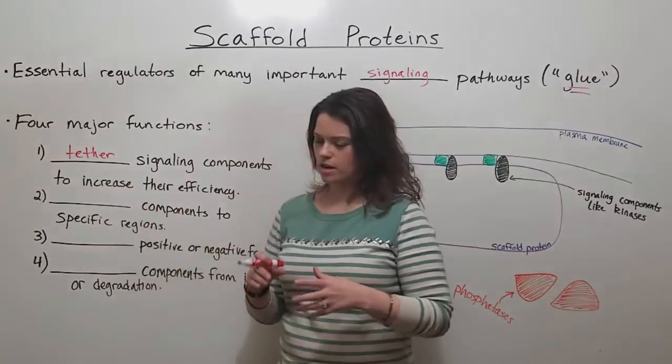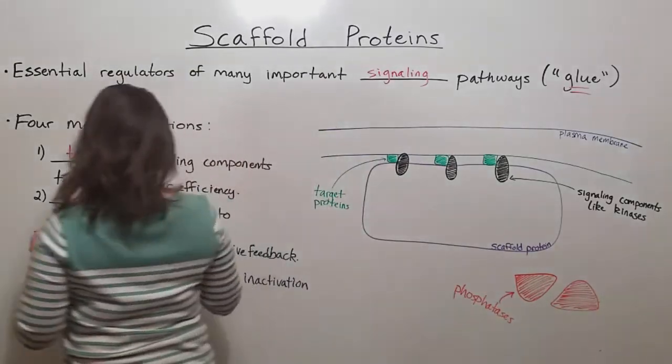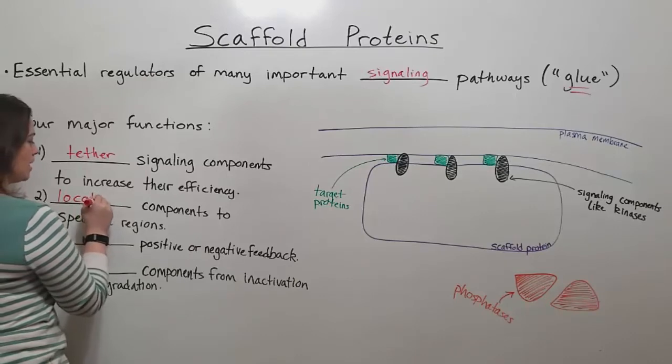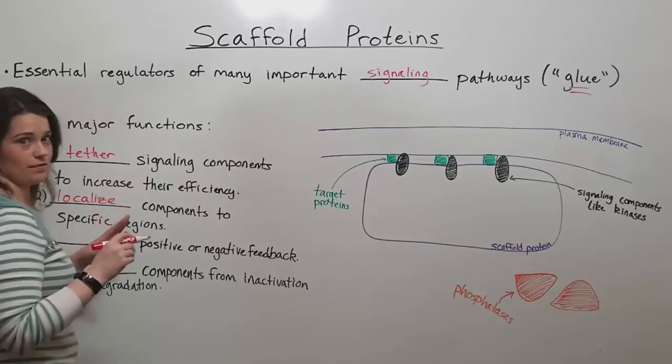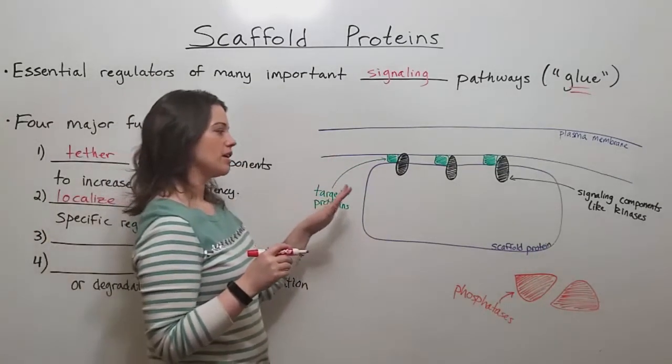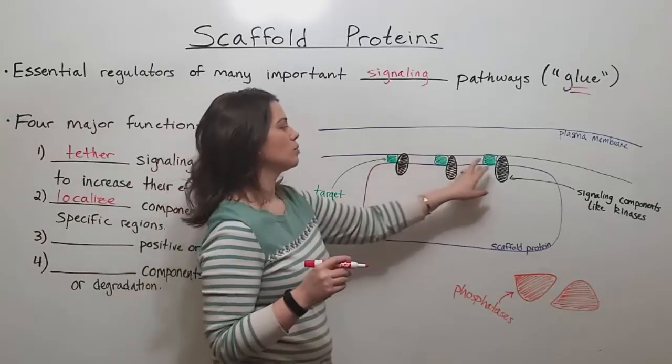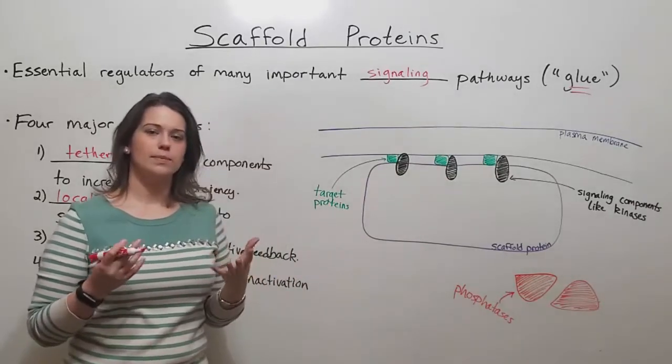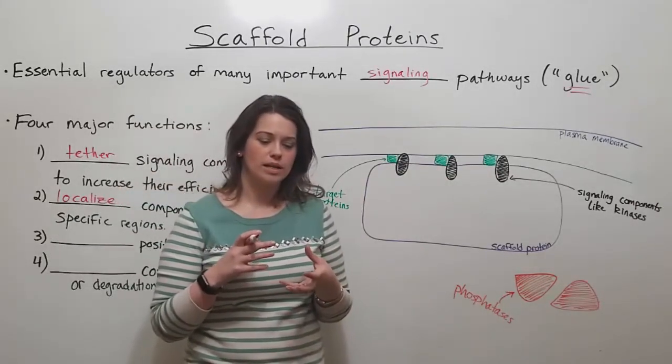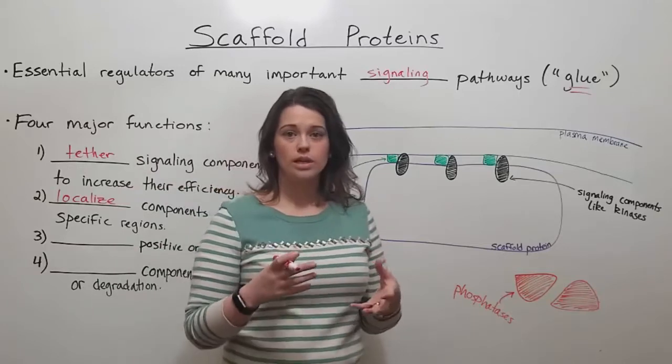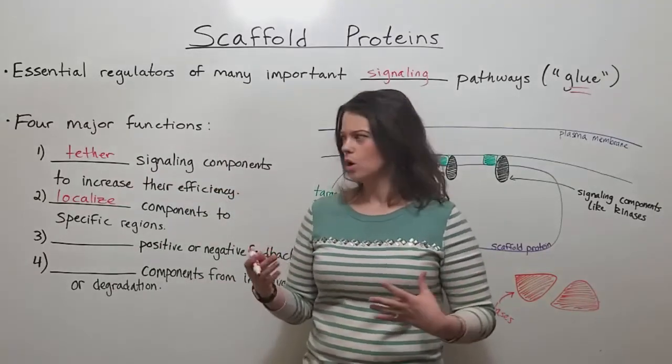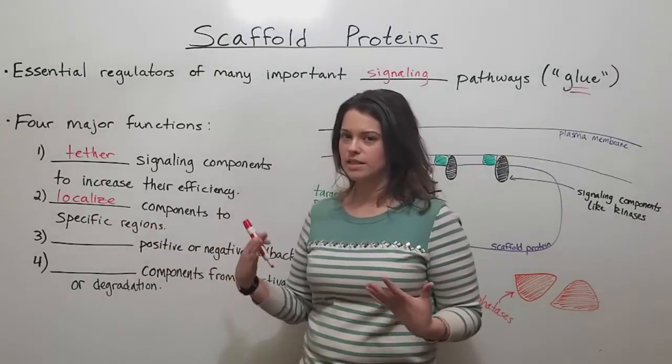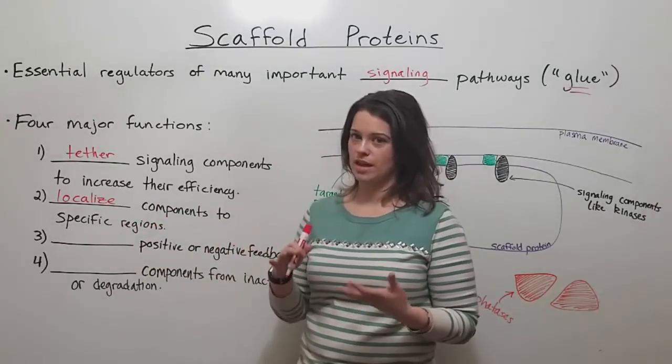The next function where scaffold proteins are so important is they localize the signaling components to specific regions. In the drawing here, this scaffold protein is holding these proteins quite close to the plasma membrane. Other scaffold proteins might localize signaling components close to the nucleus or a mitochondrion. Whatever region of the cell they're supposed to be active in, the scaffold proteins make sure they stay there.